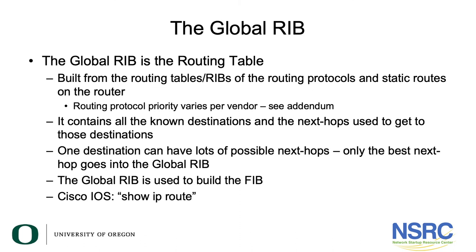The global routing information base is the routing table built from the routing tables of all the routing protocols, static routes, and connected routes of a router. Please note that different vendors tend to give different priorities to different routing protocols. The global routing information base contains all the known destinations and the next hops used to get to those destinations. One destination can have many possible next-hop addresses, but only the best next-hop address goes into the global routing information base.